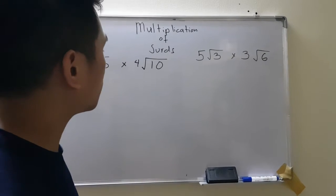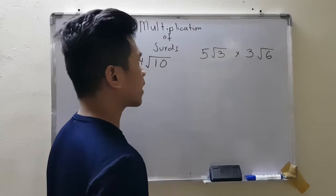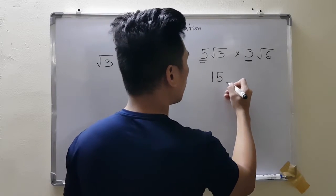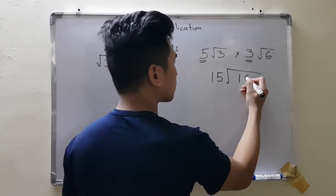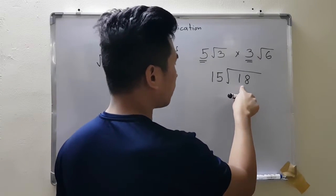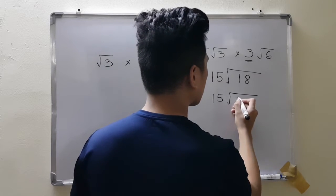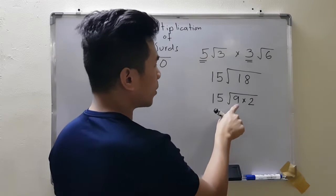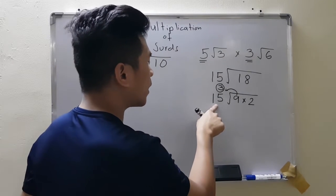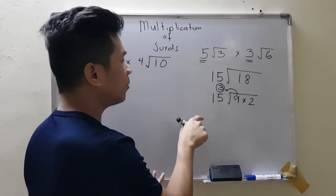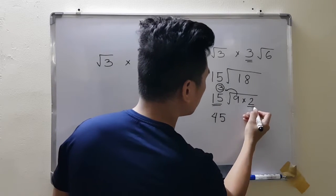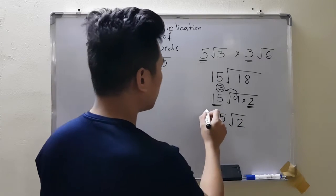Multiplication of surds: all you have to do is multiply the number outside by the number outside — so 5 times 3 gives 15 — and then multiply the numbers inside the square root: 3 times 6 gives 18. Check if the number inside can be simplified. In our case, 18 can be written as 9 times 2. Square root of 9 is 3, so it comes outside. Since there's already a 15 outside, multiply: 3 times 15 gives 45, leaving the 2 inside. That is our answer in simplest form.